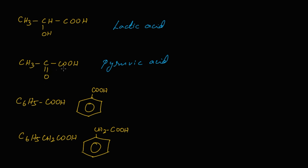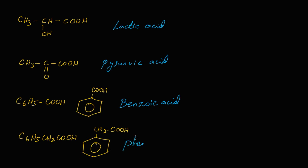The fourth compound is C₆H₅CH₂COOH — this is acetic acid with a phenyl group attached instead of one hydrogen, so it is known as phenyl acetic acid. Now let's give the IUPAC names for these compounds.